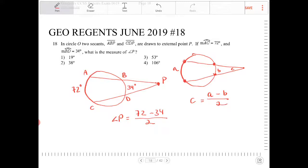And what would that turn out to be? Okay, that would be 38, 38 over 2, or it's going to be 19. So that's option one.